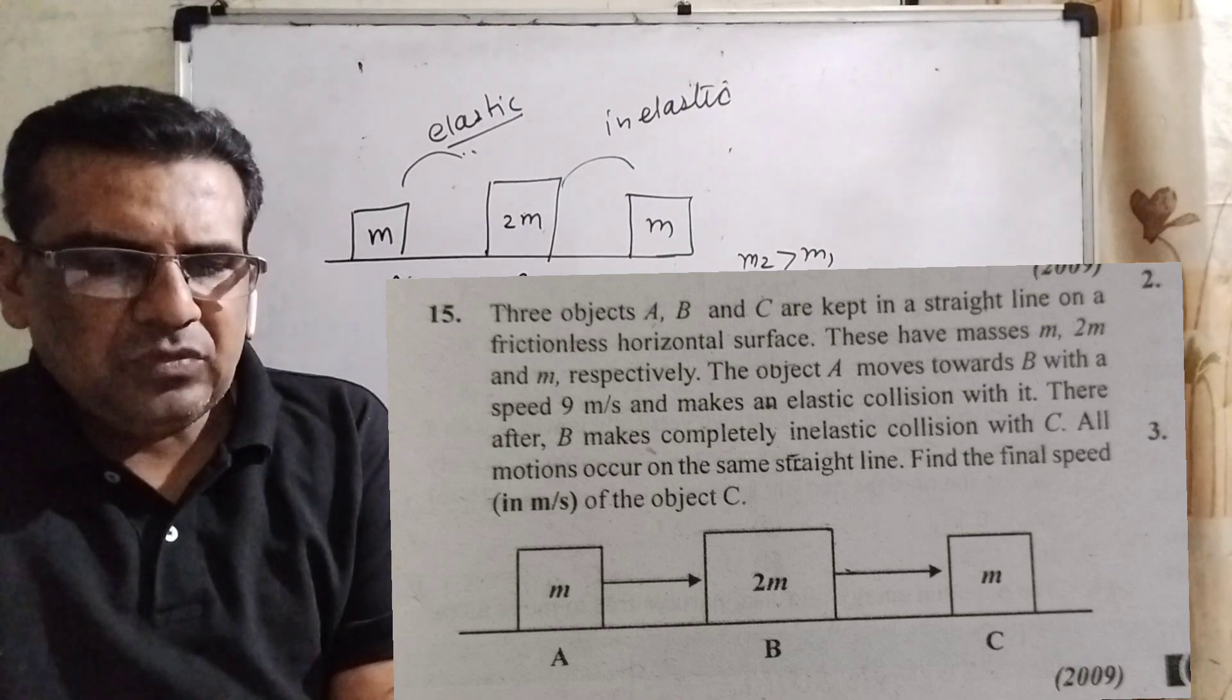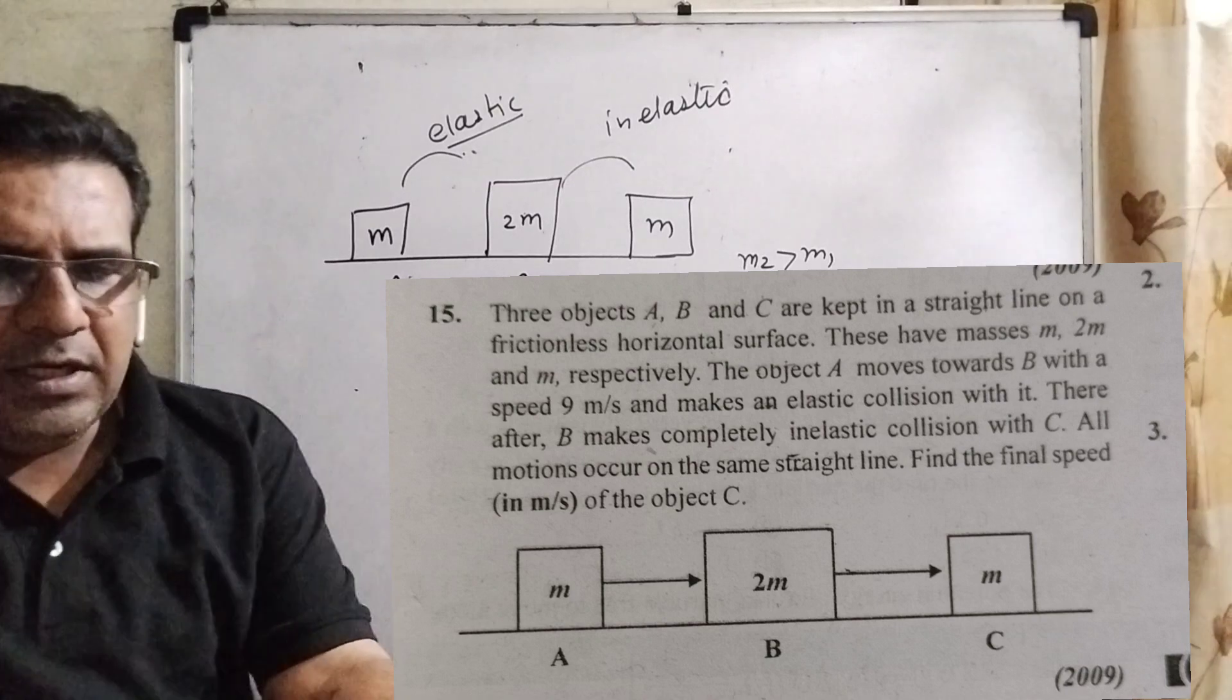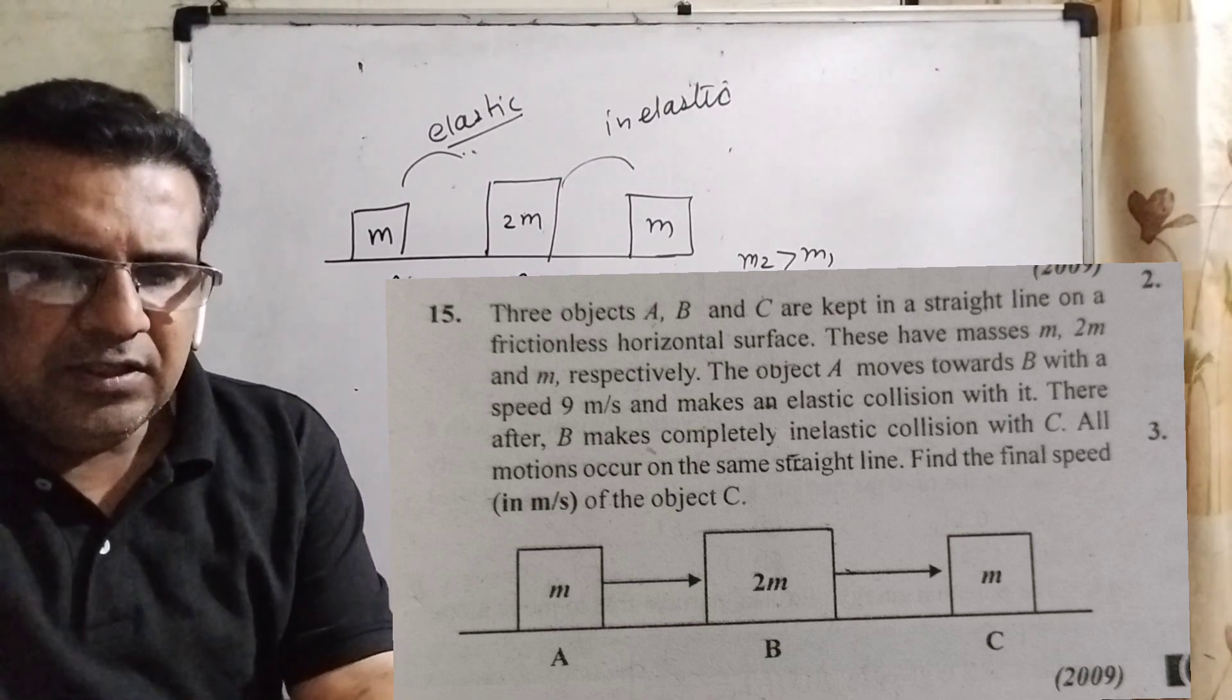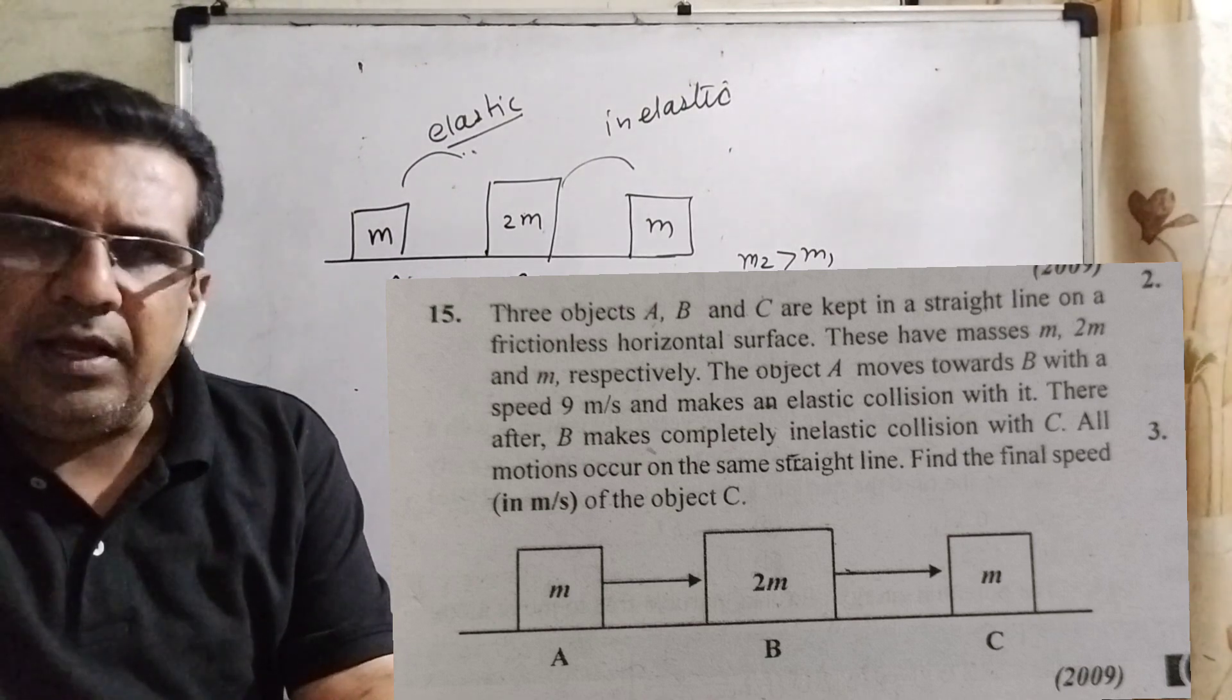Here is the question. Three objects A, B and C are kept in a straight line on a frictionless horizontal surface. These have masses M, 2M and M.